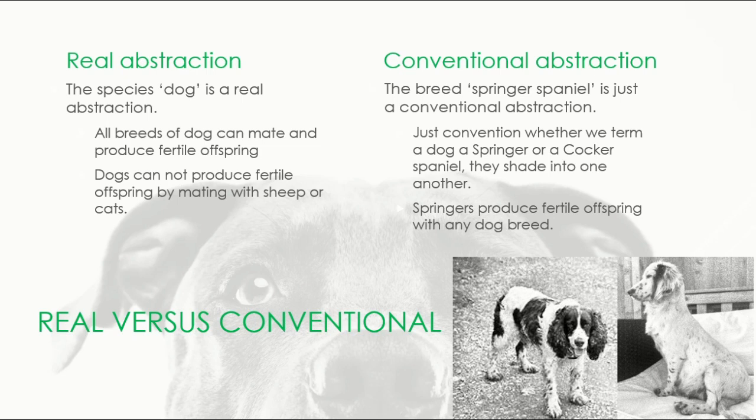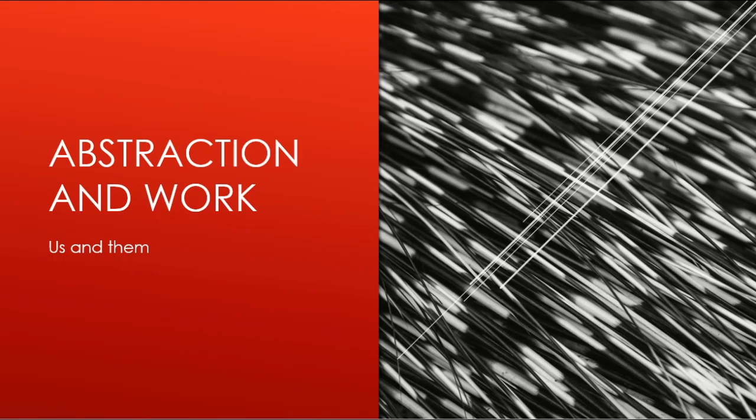Springer Spaniels and Cocker Spaniels shade over into one another — it's a convention partially established by organizations like the Kennel Club, but not a real abstraction. As far as dogs are concerned, a Springer Spaniel and any other dog is just a dog, and they'll produce fertile offspring with any breed. So it's a purely human convention. What, then, about abstraction and work — the notion of an abstract category of work?